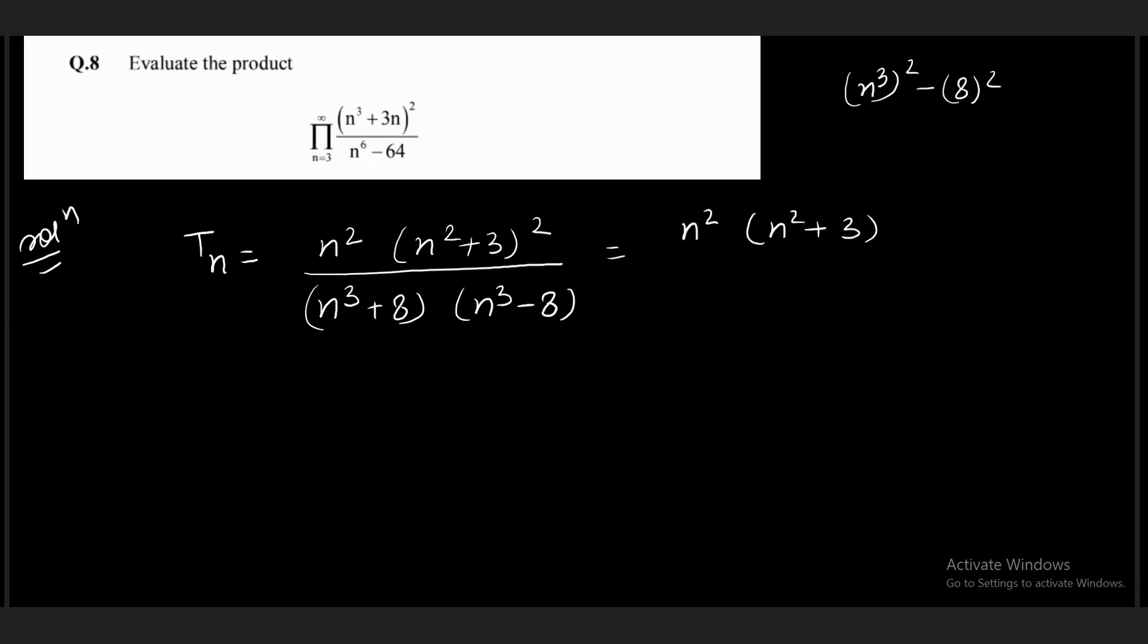Write it as (n² + 3) and one more (n² + 3). Coming to denominator, I can factorize it further. I am going to write (n + 2) and (n - 2) from here. The leftover factors give another factor n² + 2n + 4. So these are the 4 factors of the denominator.